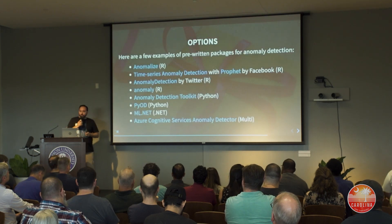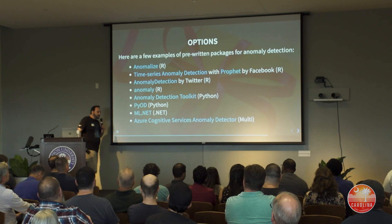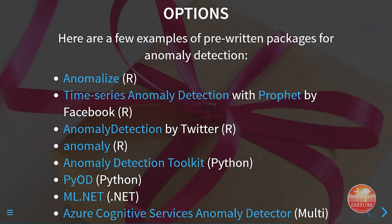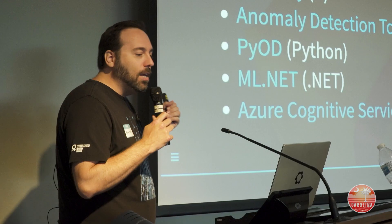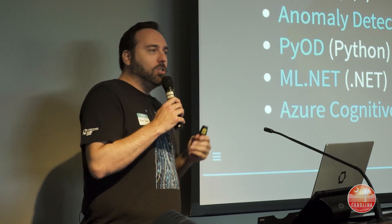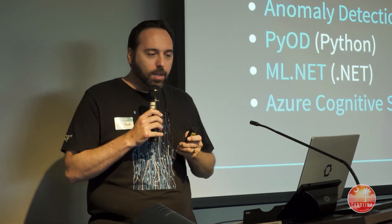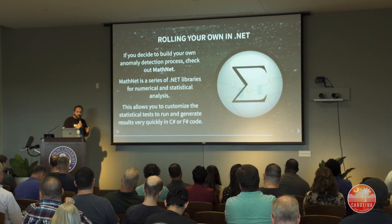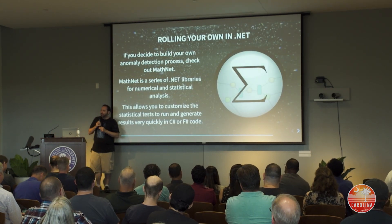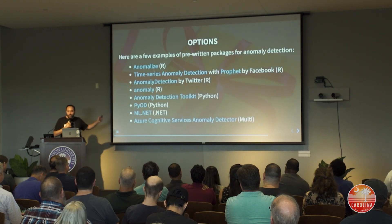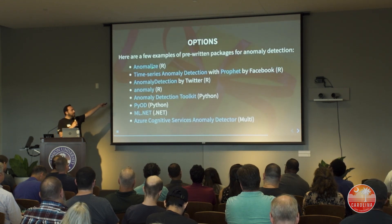I've got about five minutes left. I would recommend instead of building your own, definitely check out libraries first — there are plenty in R, Python, and .NET. If you're in Python, I highly recommend PyOD — it is an outstanding library for this. If you're in the .NET world, ML.NET does an adequate job, though they are definitely behind the curve. If you're in the R world, Anomalyze is actually a great library as well.